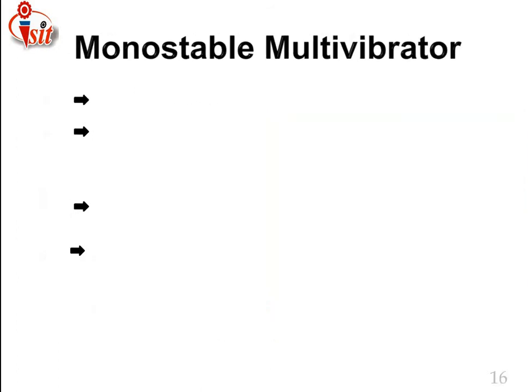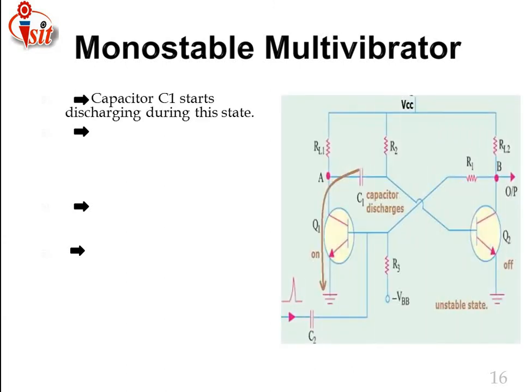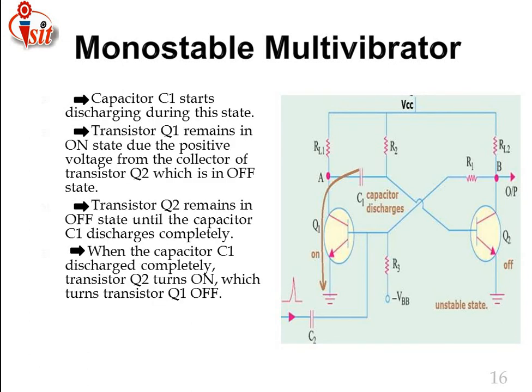When the circuit is switched on, transistor Q1 will be OFF and Q2 will be ON. The capacitor C1 gets charged during this state. When a positive trigger is applied to the base of Q1, it turns ON, which turns OFF Q2. Capacitor C1 starts discharging and transistor Q1 remains ON due to positive voltage from the collector of Q2 (which is in the OFF state). Q2 remains OFF until C1 discharges completely, after which Q1 turns OFF — this is the quasi-stable state.